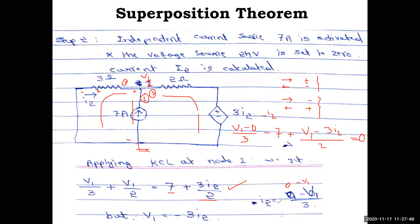Substituting v1 = −3i2 into the node equation: the equation becomes v1(1/3 + 1/2) = 7 + 3i2/2. Substituting v1 = −3i2: −3i2 × (1/3 + 1/2) = 7 + 3i2/2. This allows us to find i2.